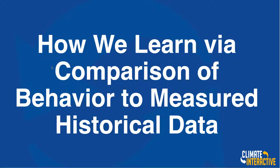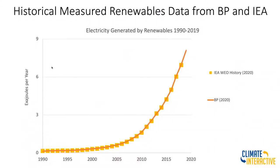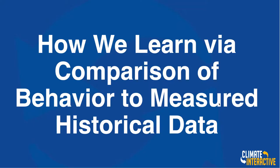The third big way that we use data is we compare our model results against both what actually happened in the system — what we call historic data — and also other models' future projections. Here is the data for overall electricity generated by renewable energy, wind and solar, from 1990 out to 2019. It shows the International Energy Agency World Energy Outlook actual data, and then British Petroleum data — both of those sources. This is the actual data.